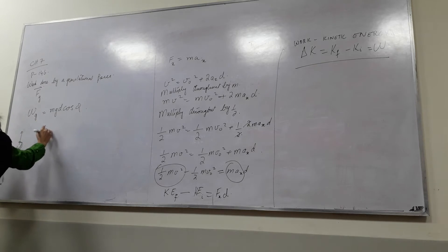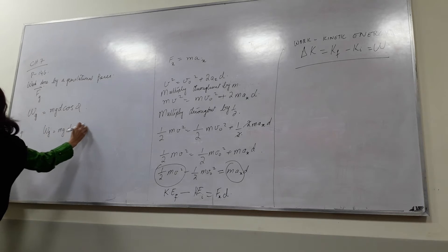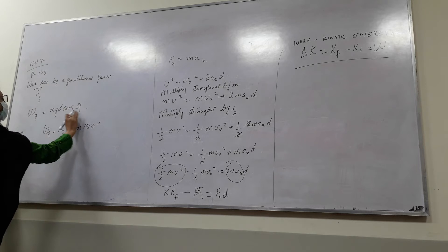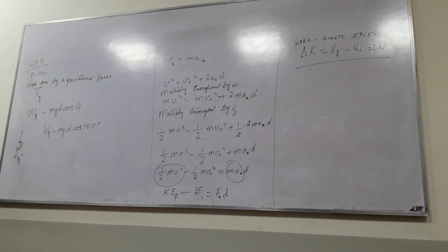So you can write that this is equal to Wg equals mg d cos 180 degrees. Instead of phi, you can write 180 degrees. What is cos 180 degrees?